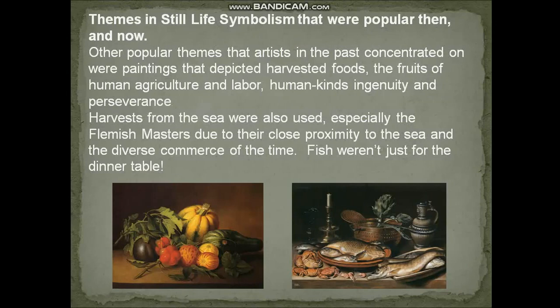Other popular themes that artists in the past concentrated on were paintings that depicted harvested foods — the fruits of human agriculture and labor. Humankind's ingenuity and perseverance, harvested from the sea, were also used, especially by the Flemish masters due to their close proximity to the sea and the diverse commerce of the time. Fish were not just for the dinner table.